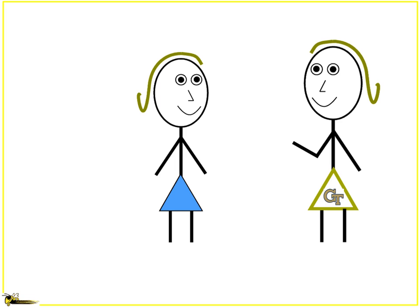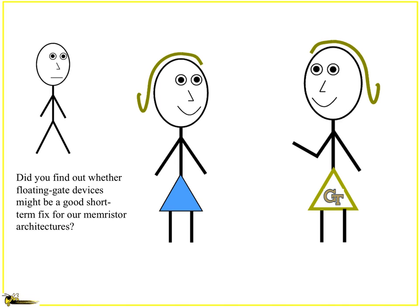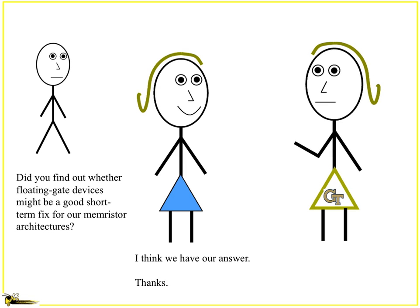So we kind of have this conversation. It makes sense. And then the person comes wandering by and goes, hey, did you find out if floating gates are a good short-term fix for all the memristor stuff? Because that's what we want to do for neuromorphic things. And the person says, yeah, I think we have our answer. I'll need to explain this to you as you can now explain to others, and move along.